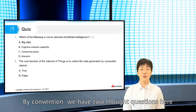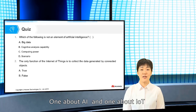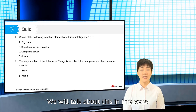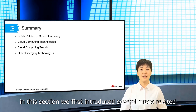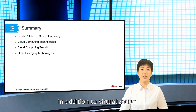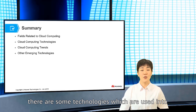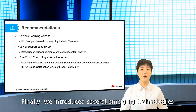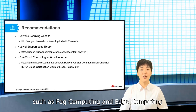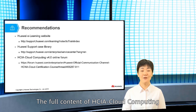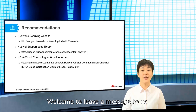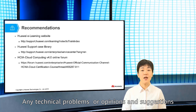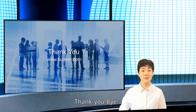By the way, we have two short questions here — one about AI and one about IoT. We will talk about this in this issue. Let's make a summary. In this section, we first introduced several topics related to cloud computing, including container and OpenStack technologies. Finally, we introduced several emerging technologies such as fog computing and edge computing. The full content of HCIA cloud computing is finished today. Welcome to leave us a message on our official channel with any technology questions, opinions, and suggestions. Thank you. Bye.